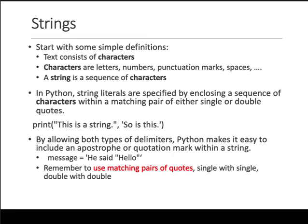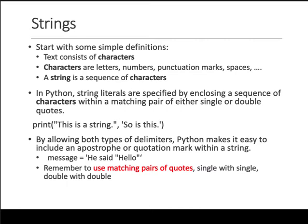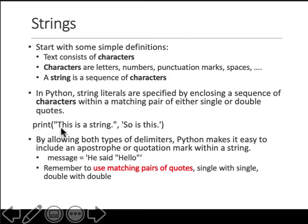Strings are basically a sequence of characters, and a string is just another variable. Just remember that strings are sequences of characters and they are just variables. In Python you can define a string in double quotes or single quotes. Anything that you write in double quotes or single quotes inside a print statement will be thrown out to screen as is.